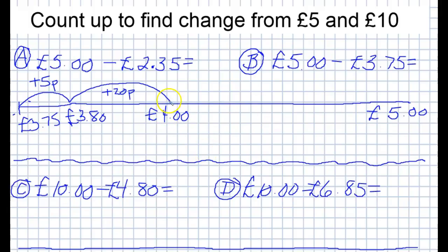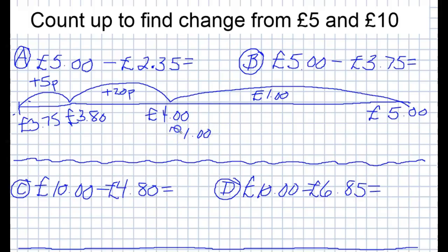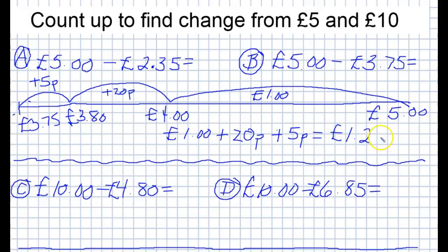And obviously four pounds to five pounds — that would be a jump of one pound. So as you should know by now, because we've done frog jumps so often in class, we basically just add up these amounts here. So we've got one pound plus twenty pence plus five pence, which equals one pound twenty-five pence.